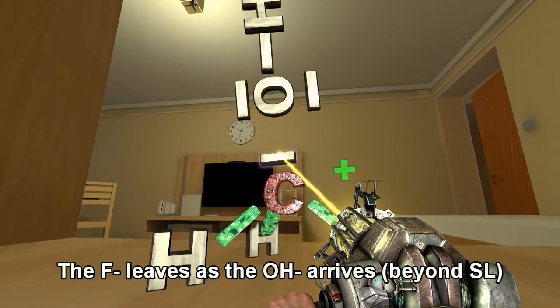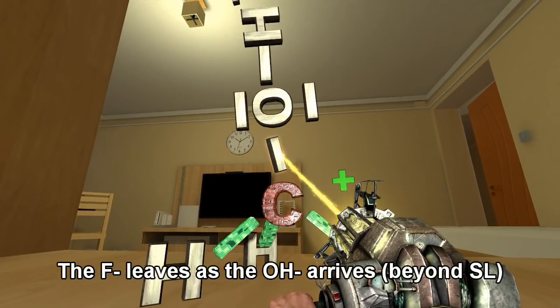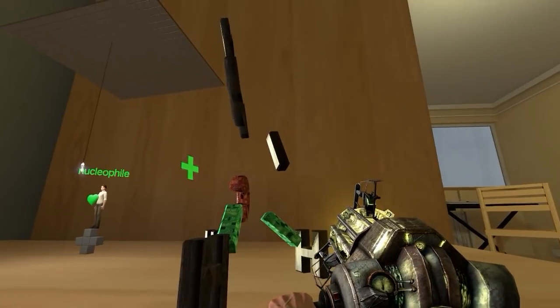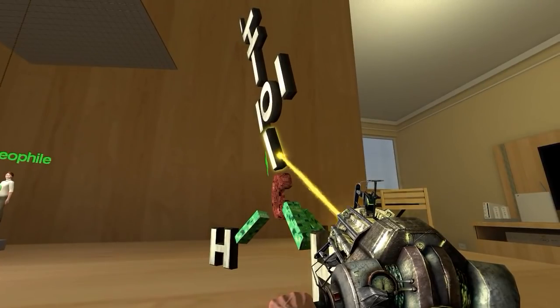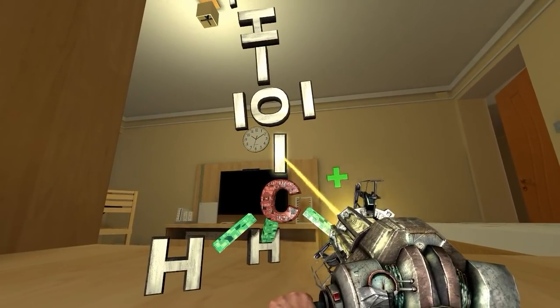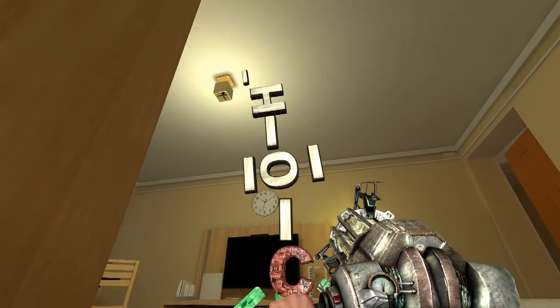That lone pair on the oxygen becomes a dative covalent bond with the carbon. Remember, dative covalent bonds are formed when electrons in the covalent bond come from just one of the atoms in the bond, not from both of the atoms.